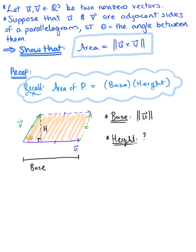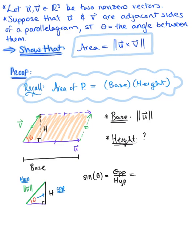Let's take a closer look at the right triangle we have created. We have the hypotenuse, the base, and the unknown height. The hypotenuse is associated with vector v, so its length is the magnitude of vector v. Using right triangle trigonometry, the trig function relating the hypotenuse and the opposite side is sine. So sine of theta equals the opposite over the hypotenuse, which gives us h over the magnitude of vector v. Solving for h, the height equals the magnitude of vector v times sine of theta.